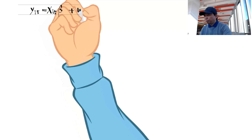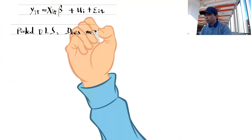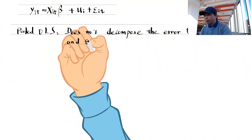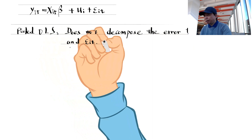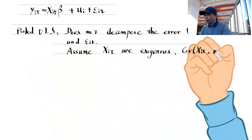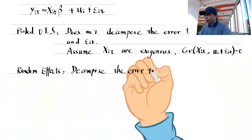The pooled OLS estimator does not decompose the error term into mu_i and epsilon_it. It assumes that the explanatory variables are exogenous, that is, not correlated with the error term.